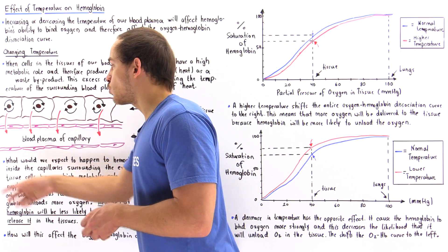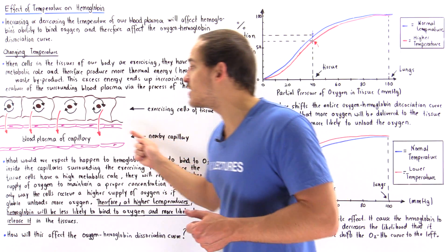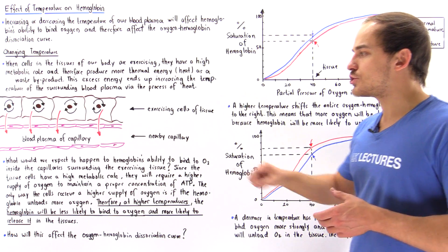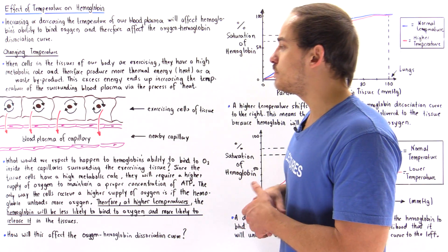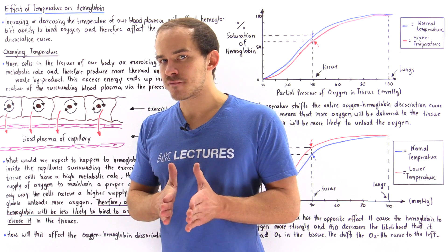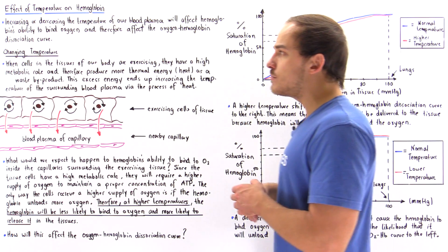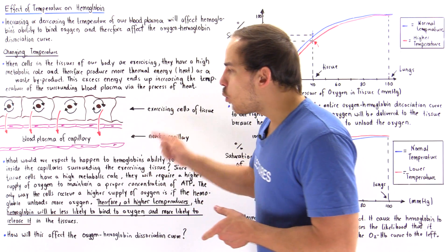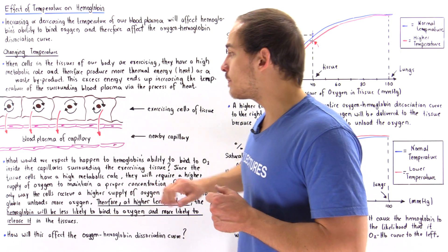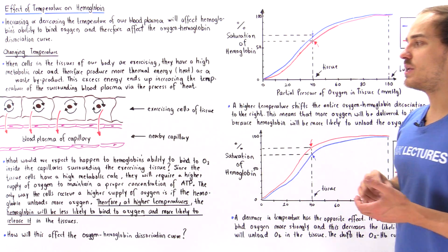As the blood plasma receives more thermal energy from the cells, it increases in temperature because the particles, molecules, and cells within our blood plasma gain more kinetic energy. So we increase the temperature of the blood plasma within our capillary. Now that we know where the increase in temperature comes from, let's discuss how it affects the ability of hemoglobin to bind to oxygen — specifically, what would we expect when we increase the temperature of blood plasma containing red blood cells carrying hemoglobin?